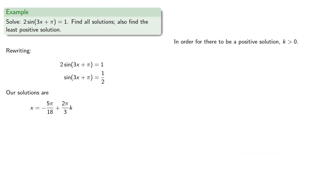And now in order for there to be a positive solution, k must be greater than 0. And so we find the least positive solution will be if k equals 1. And so the least positive solution is x equals 7pi over 18.